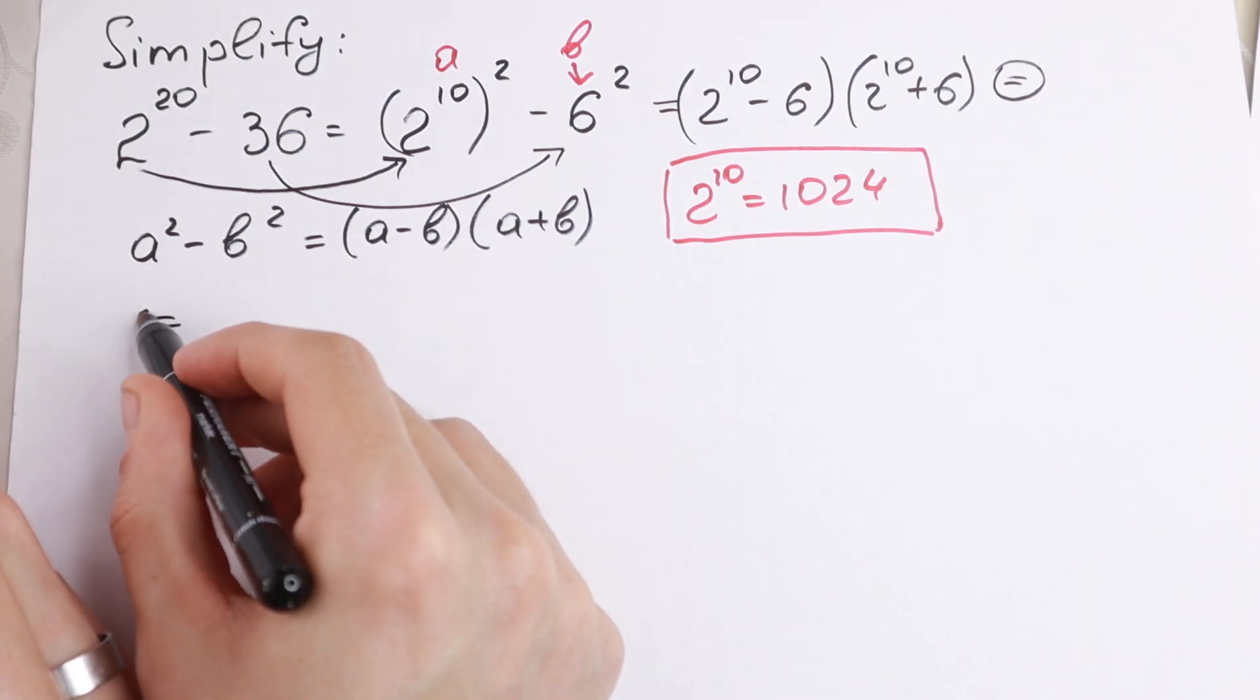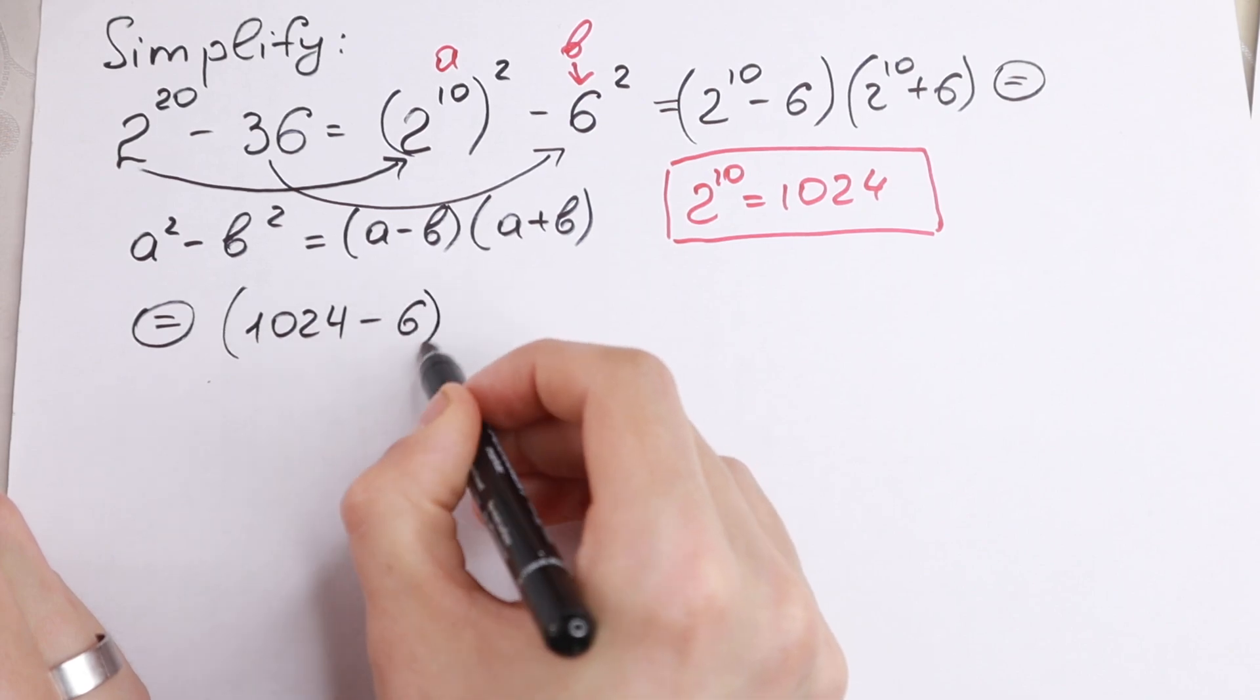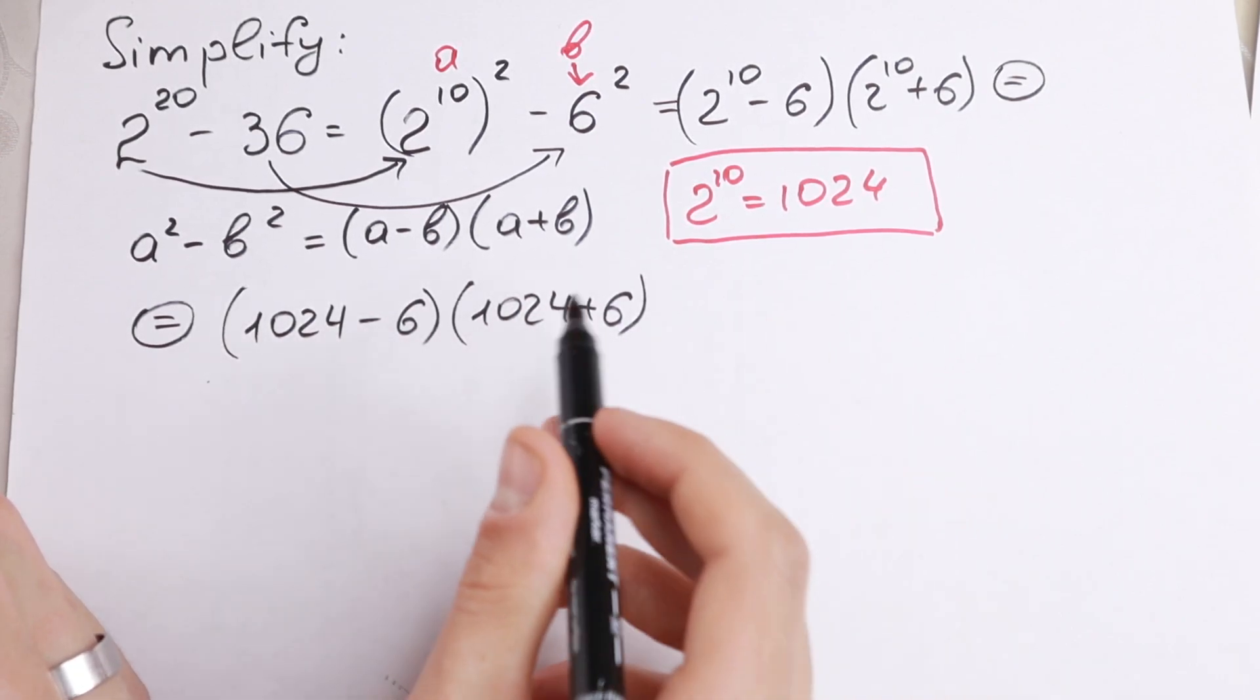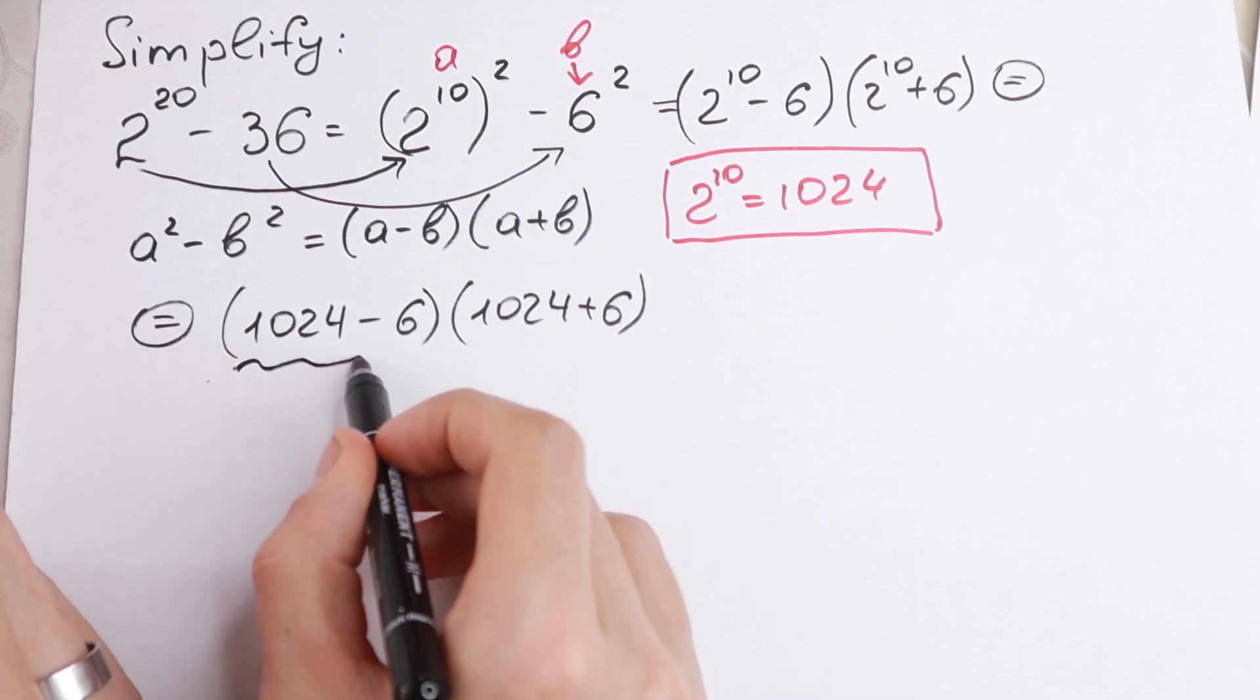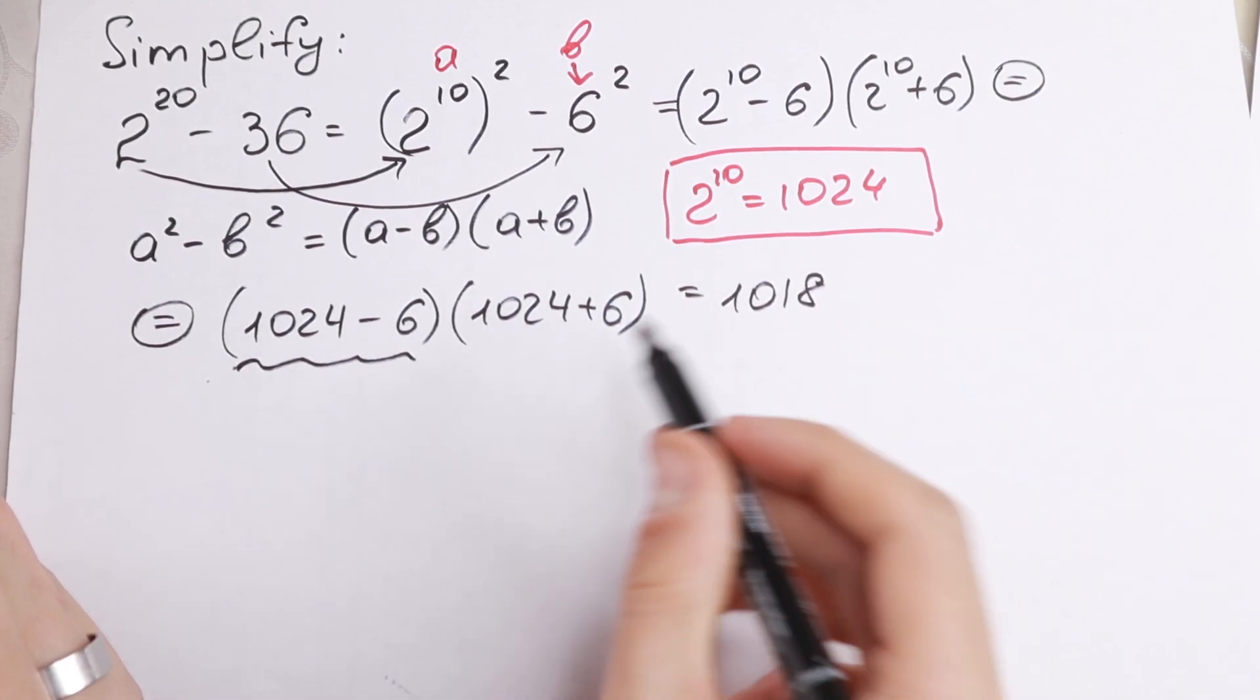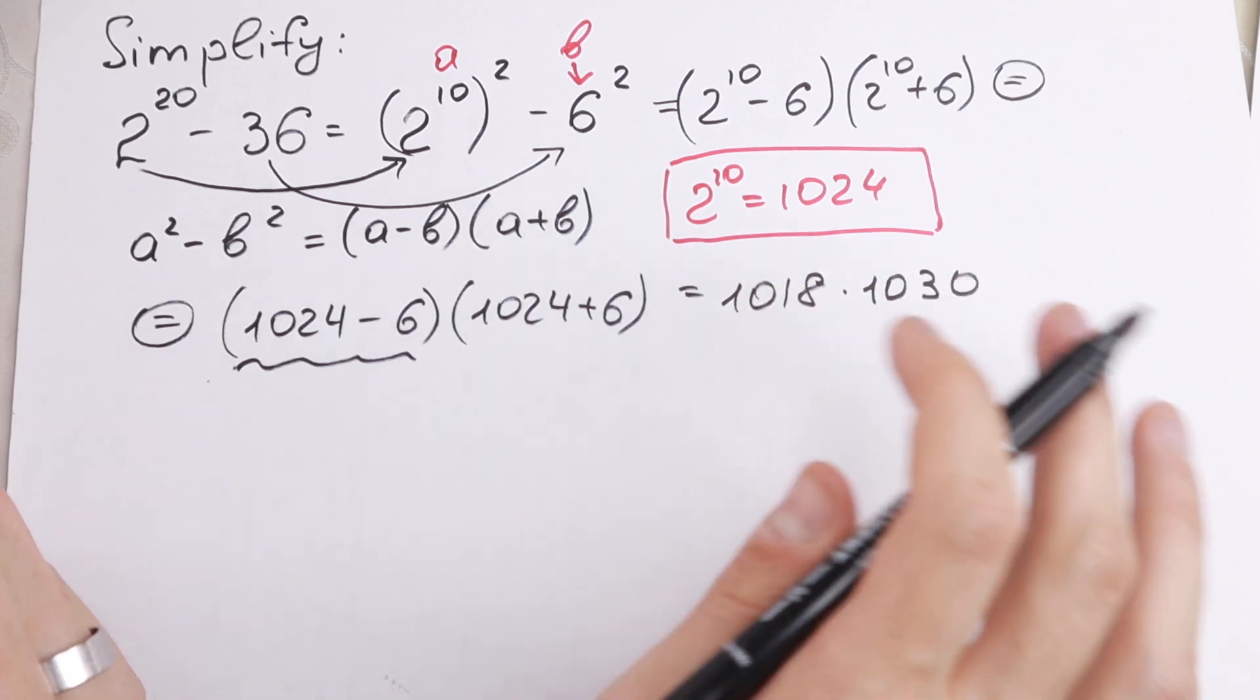This is not a huge number, so we can write it as 1024 minus 6 times 1024 plus 6. And it's not hard to calculate this. From here we will have 1018 and from here we have times 1030. So we have a product.